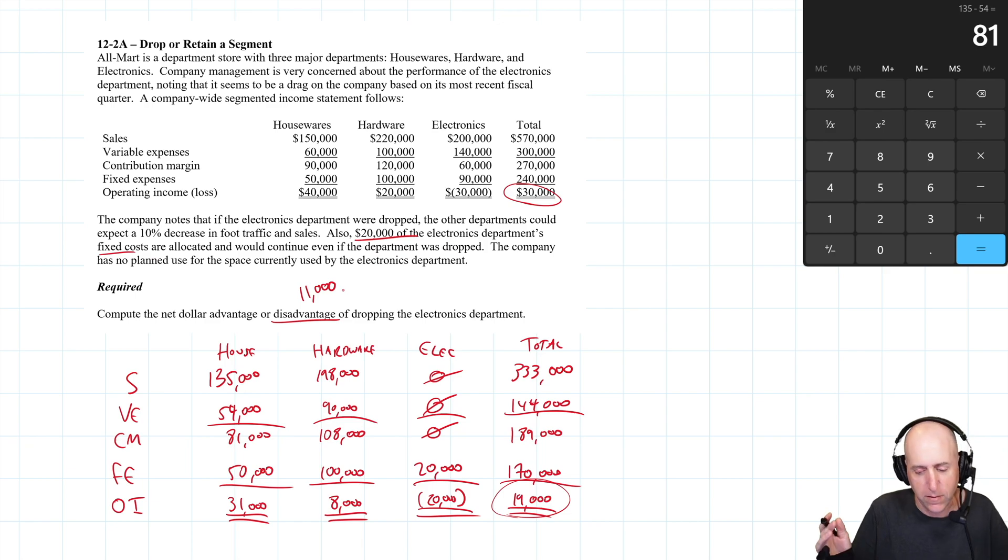I mentioned at the start I will show you a quicker way to do this, but my brain doesn't process it this way. Here's a quicker way. You would say, what's the reason we dropped the electronics department? A big reason is you're going to save some fixed expenses. So this is what's relevant. We've actually looked at irrelevant costs. This $20,000 that stays in the company is not different between the alternatives, so it's not a differential cost. So it should be irrelevant. This way is just looking at incrementally what are the relevant items.